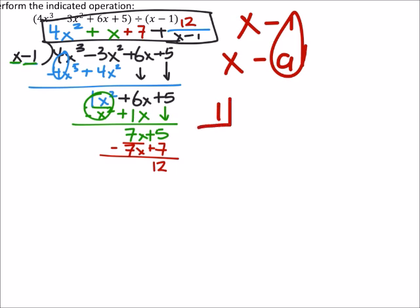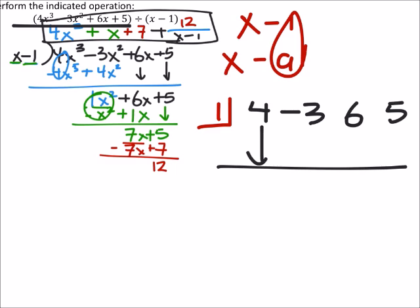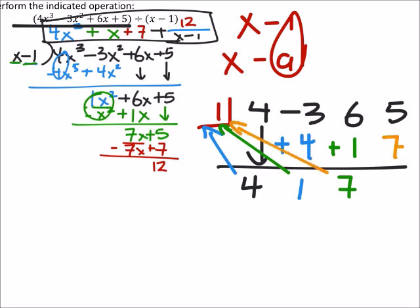And then I've got all the coefficients from the dividend. So, I've got 4. That was a -3. I've got a positive 6 and then a positive 5. Always bring the first coefficient down. So that's 4. Then I've got 4 times 1, which is 4. Then I add these two. -3 + 4 is 1. Then I've got 1 times 1, which is 1. So, I've got 6 + 1 is 7. And then I've got 7 times 1, which is 7. And I'll add these two as well. 5 + 7 is 12.